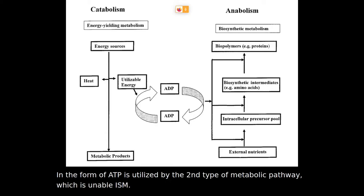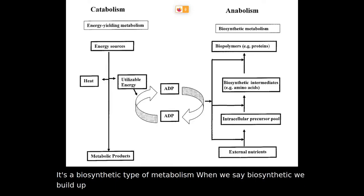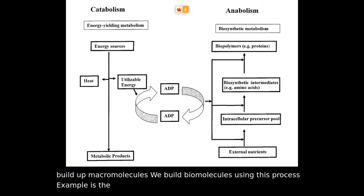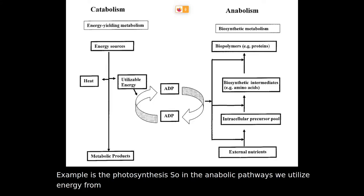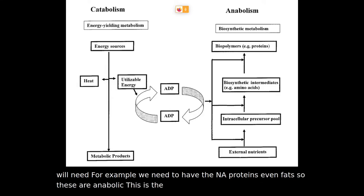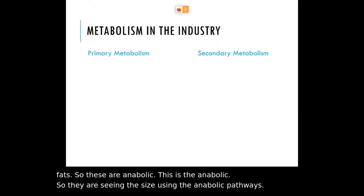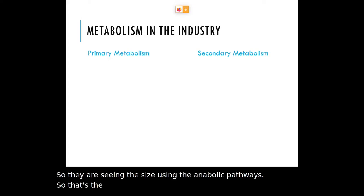Anabolism is a biosynthetic type of metabolism. When we say biosynthetic, we build up macromolecules and biomolecules using this process. An example is photosynthesis. In the anabolic pathways, we utilize energy from catabolism to create biological molecules that we need — for example, DNA, proteins, and even fats. These are synthesized using the anabolic pathways. That's the usual two types of metabolism.